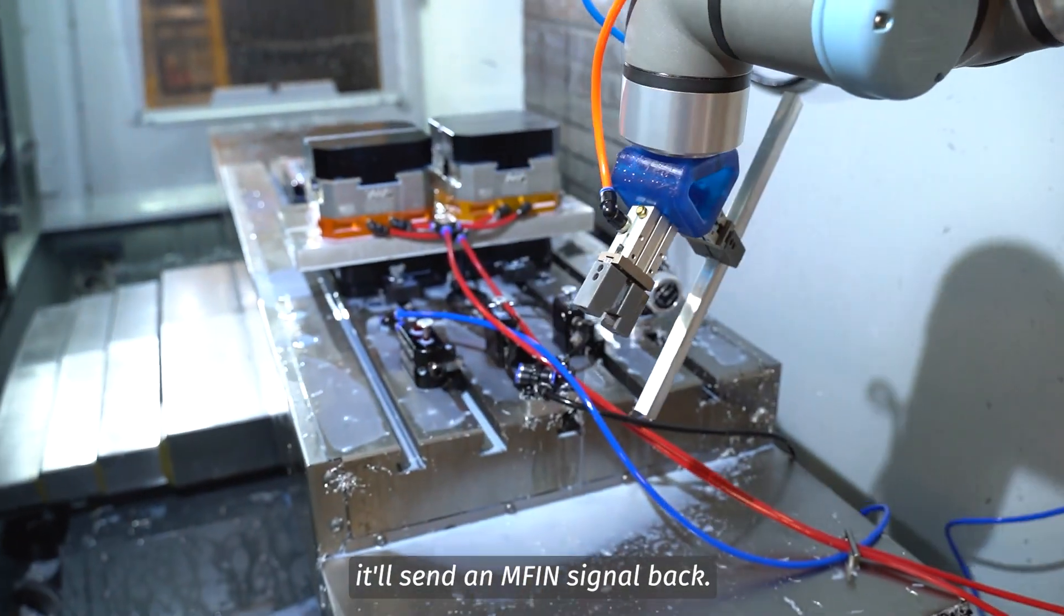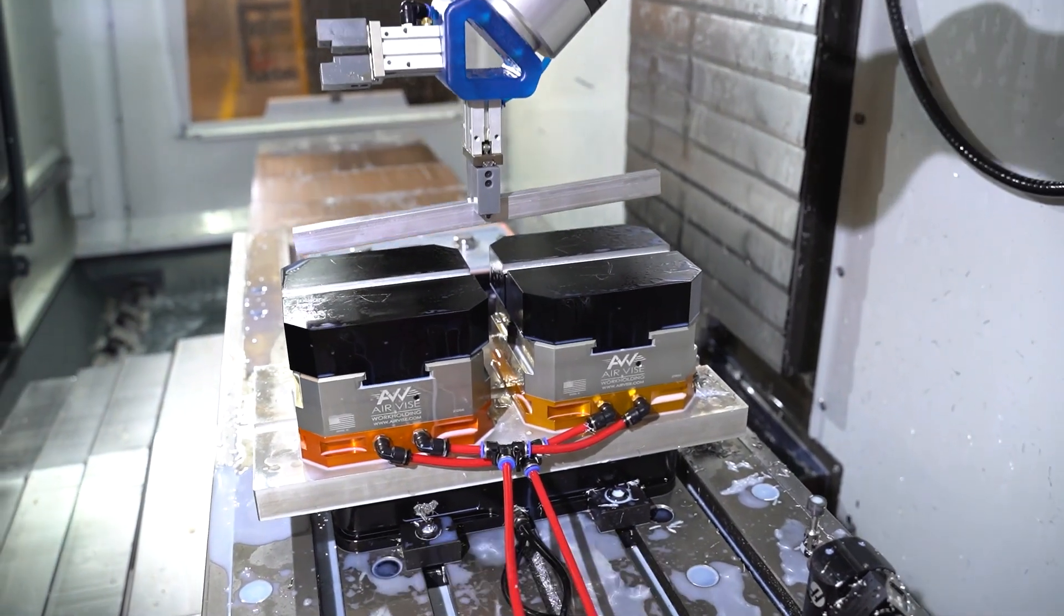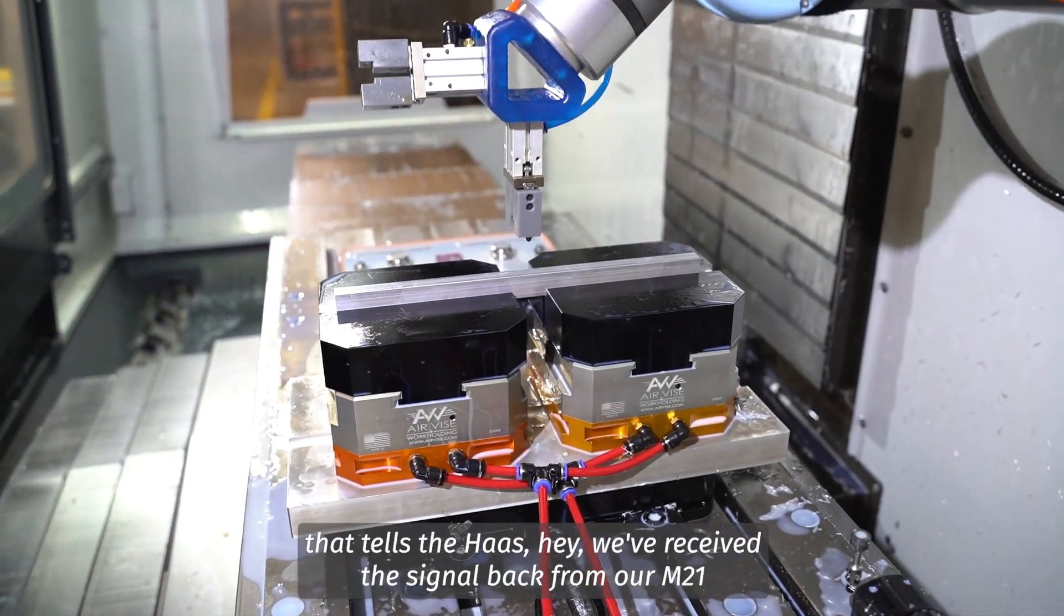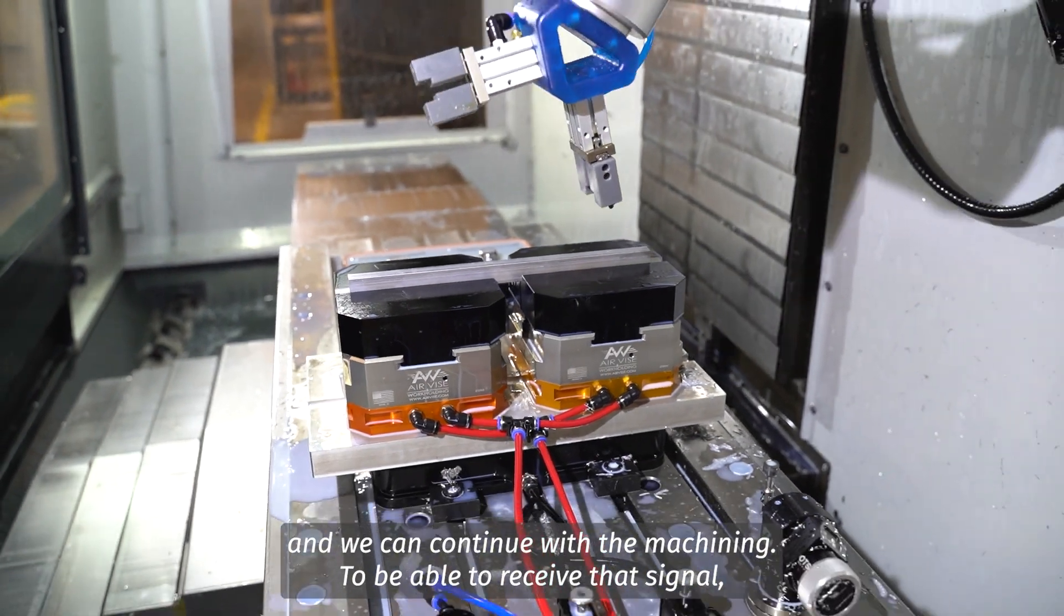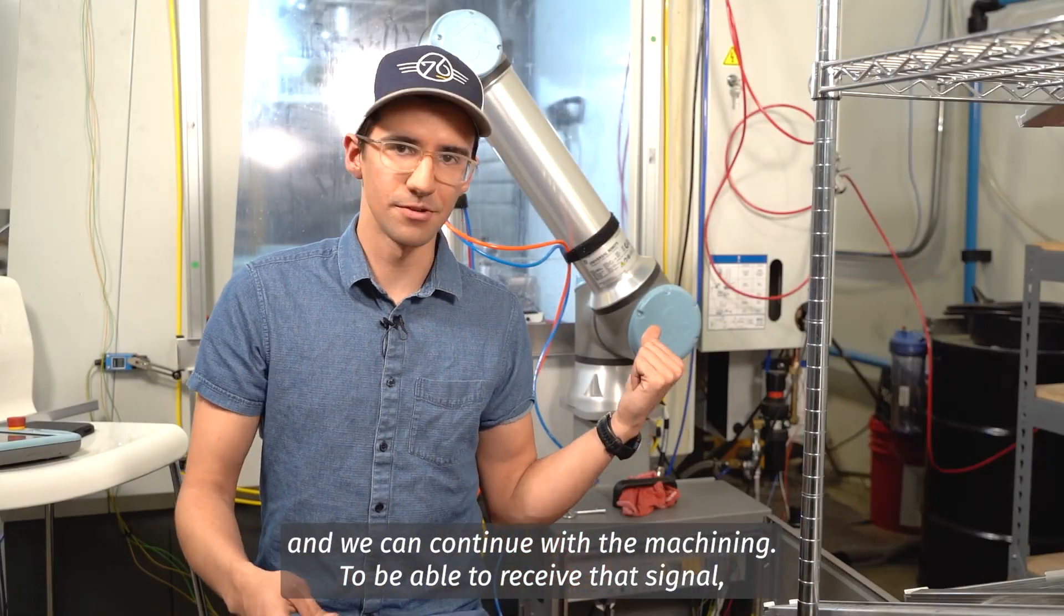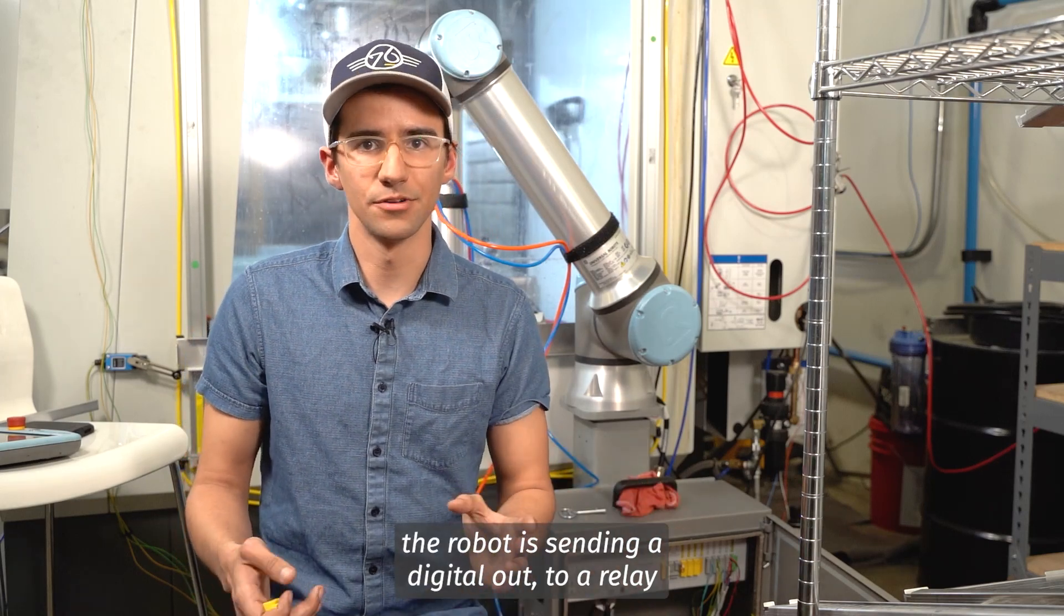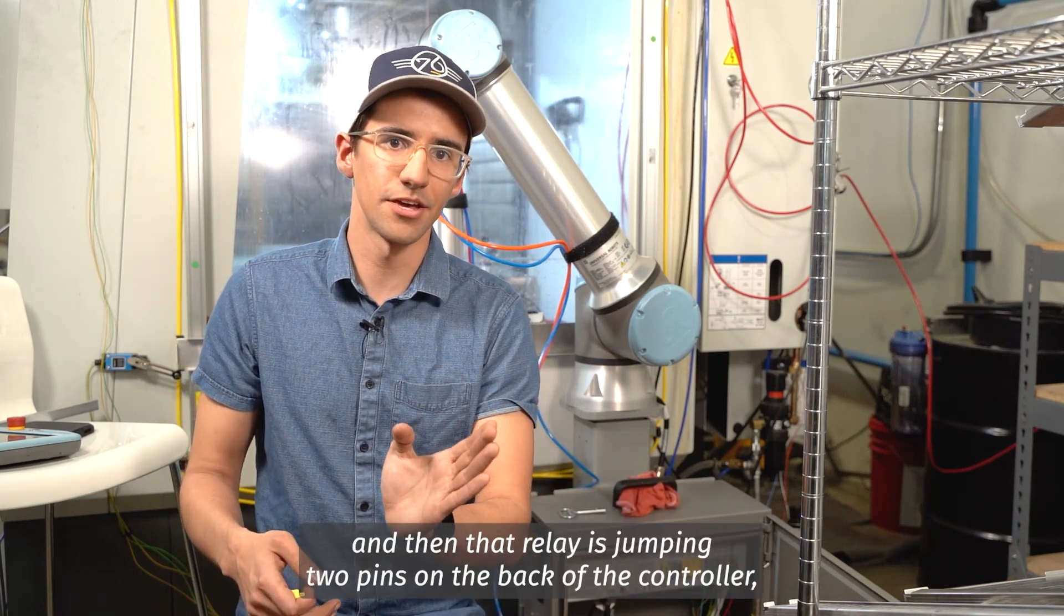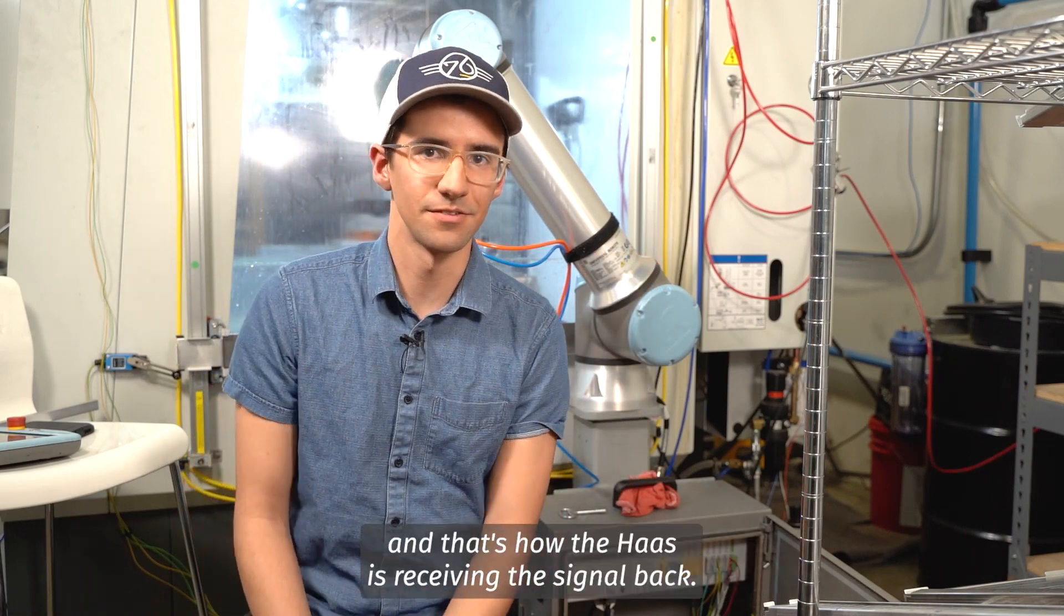MFIN is the connector on the back of the Haas that tells the Haas, hey, we've received the signal back from our M21, and we can continue with machining. To be able to receive that signal, the robot is sending a digital out to a relay, and then that relay is jumping two pins on the back of the controller, and that's how the Haas is receiving the signal back.